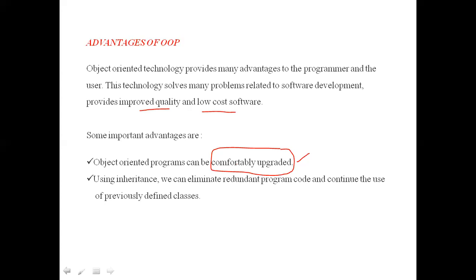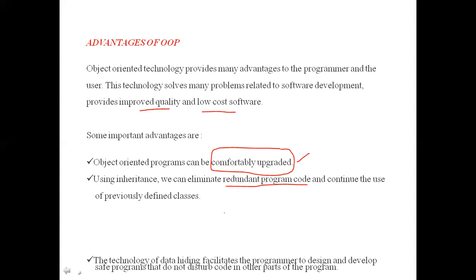Using inheritance, we can eliminate redundant program code — redundant means duplicate program code. Inheritance provides code reusability, meaning the same code can be reused. The inheritance feature of object-oriented programming enables reuse of code, which can eliminate redundant program code.